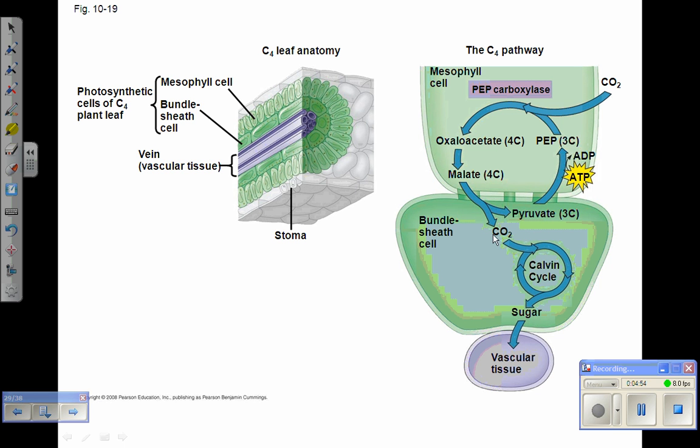This keeps the CO2 concentration in the bundle sheath cells high enough that rubisco will bind it instead of oxygen. Now in these plants, rubisco is only produced in the bundle sheath cells.